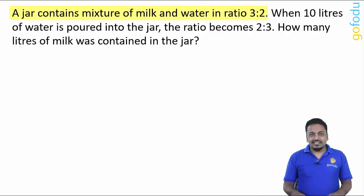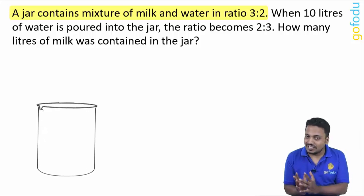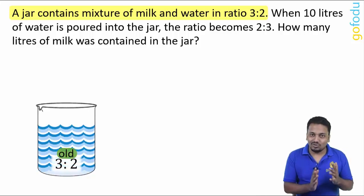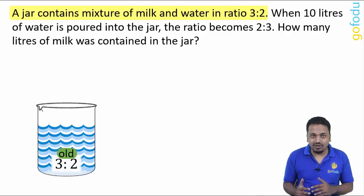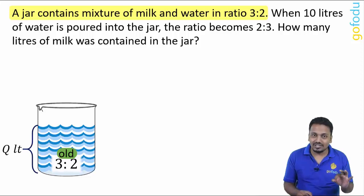A jar contains mixture of milk and water in ratio 3:2. We have a jar with mixture of milk and water in it in ratio 3:2. This is the initial or old ratio of milk and water. Quantity of this mixture is not given, let's say the quantity is Q.